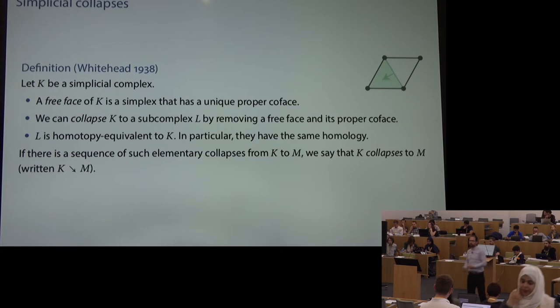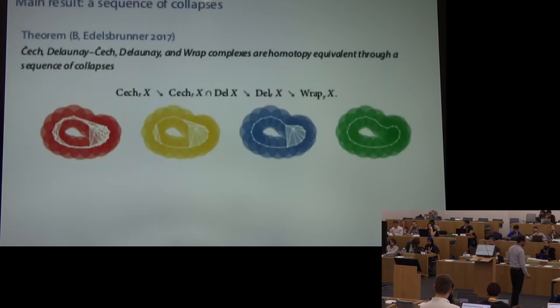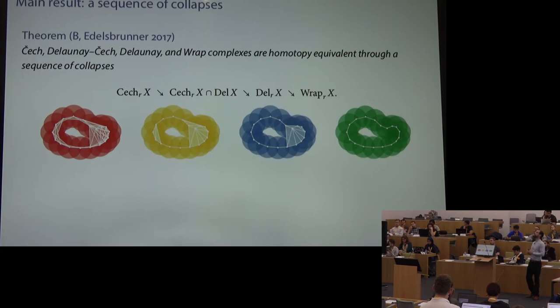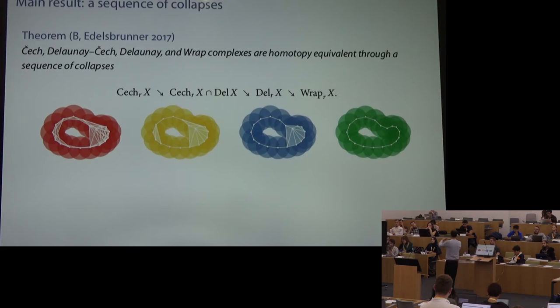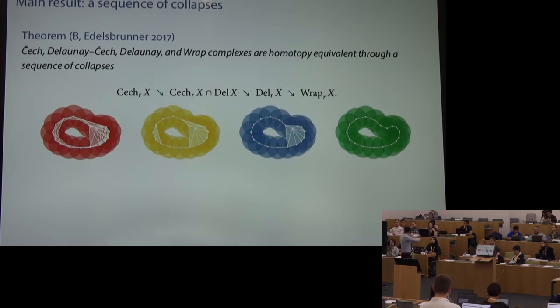We're trying to collapse the huge Čech construction to the Delaunay construction. Here's a picture of the main result: on the left in red is a big mess of edges; the second is the Čech intersected with the entire Delaunay triangulation, which is not the same as the Delaunay complex. Then you can further clean up and arrive at the wrap complex, which has the tightest geometric approximation. Topologically they're all the same, related just by throwing away simplex pairs you don't need.